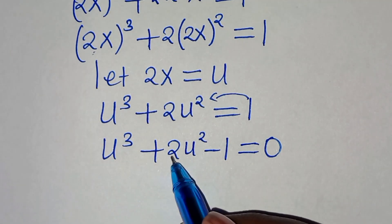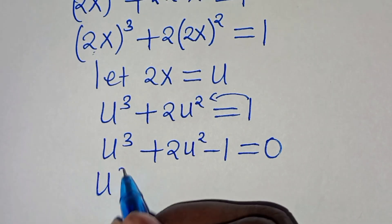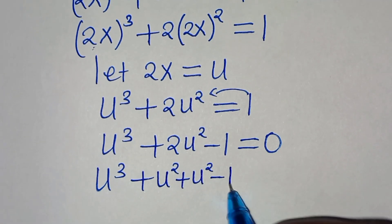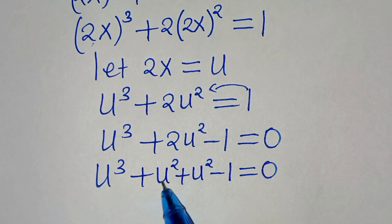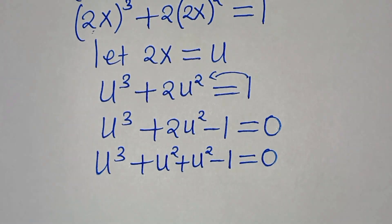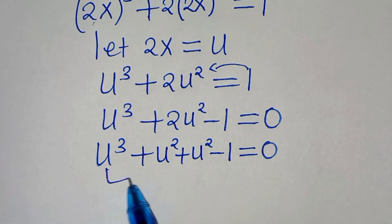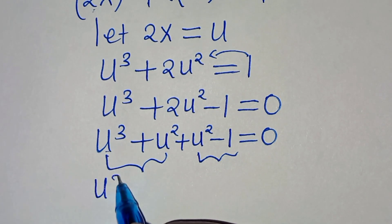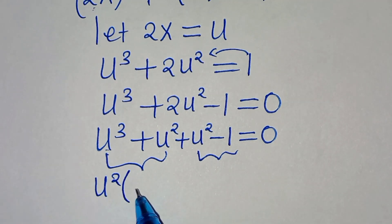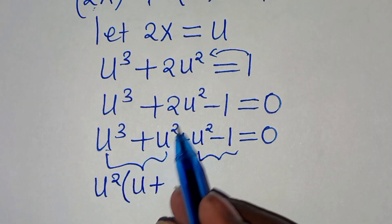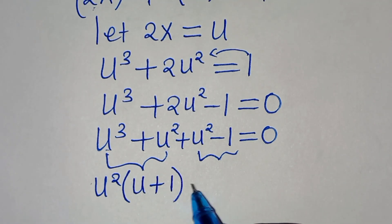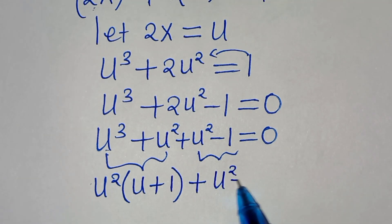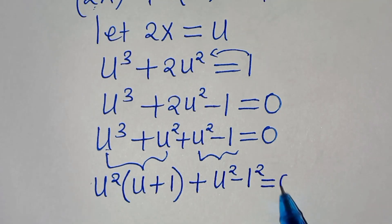We can express 2u squared as u squared plus u squared, splitting the equation into two parts. From the first part, u squared is common, so we factor it out to get u squared times (u + 1). The remaining part is u squared minus 1 squared.